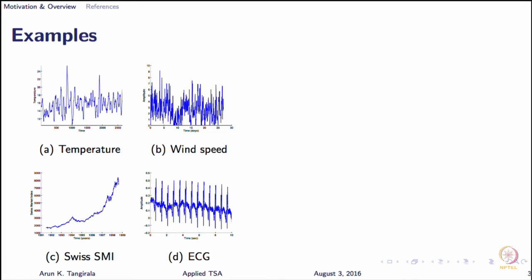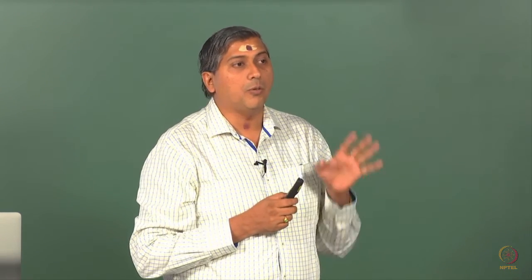And the bottom left one is something that is of interest to many, the stock market index which is perhaps also the reason why many students are enrolled in this course. So of course it is a Swiss stock market index over a particular set of years and you can see a different pattern there for the time series. It is completely different from what you have seen for the temperature and wind speed. What is the difference that you see? There is an increasing trend, right? So there is a trend. That is the technical term that we use in time series analysis when you see such patterns. And then you have at the fourth, as a fourth example, ECG coming from a human, from a patient. And that again has a different set of features. You see oscillatory features and so on.